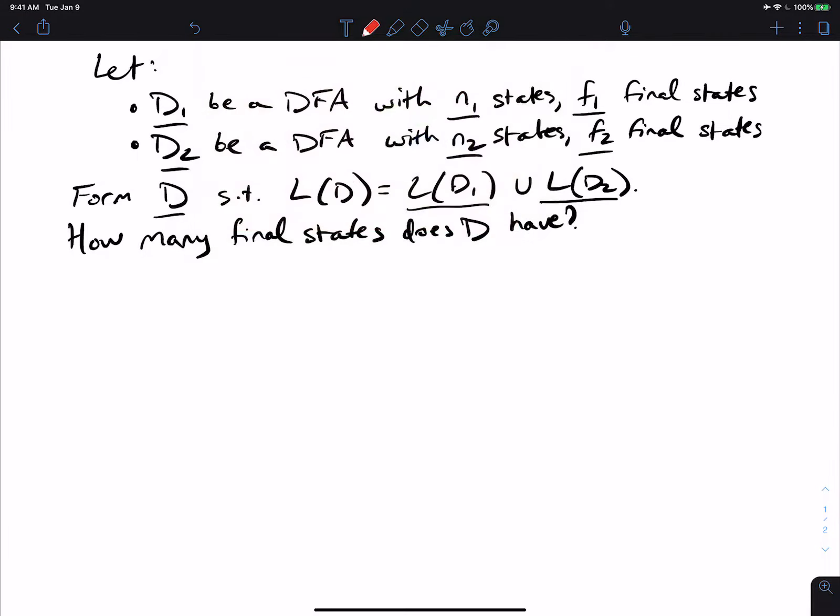So in general, what we will need is to use the product construction. So if we use the product construction to make the DFA D, then we will have the DFA D, which is the union of the two DFAs languages.